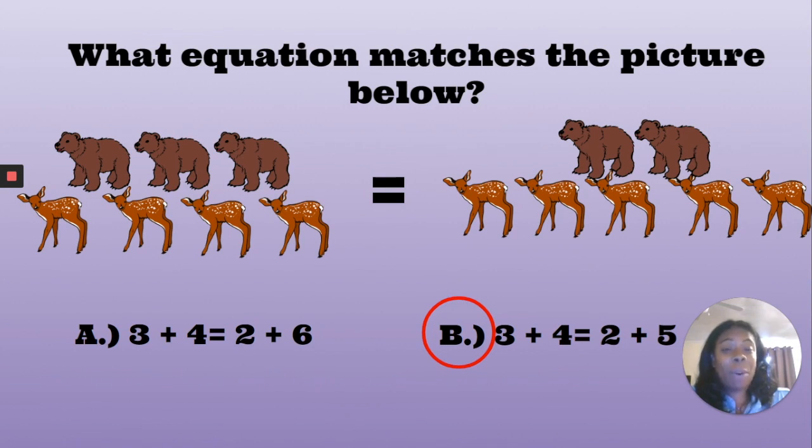They also both have the total amount of 7. And we know that if 7 is on one side and 7 is on the other, then the equation is balanced.